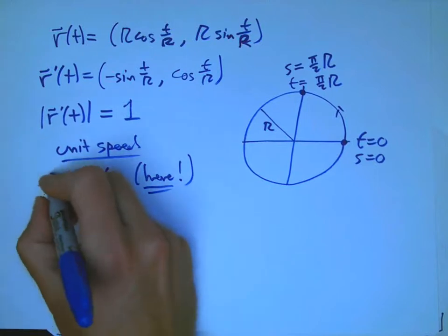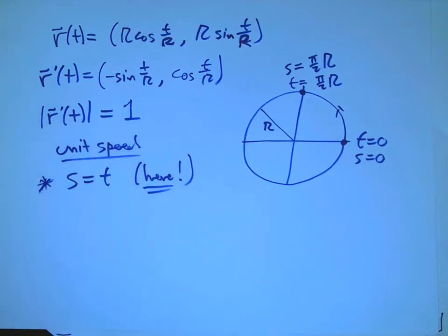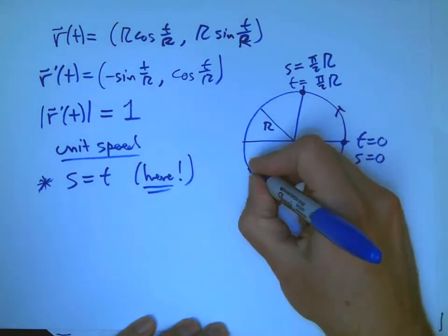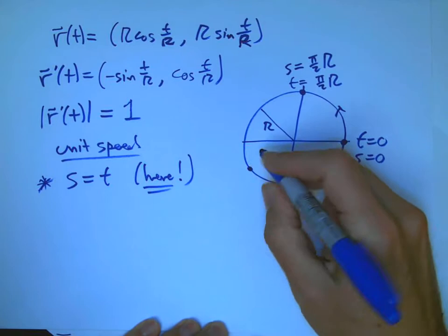So this is one of the nice, the two nice things that we're going to see at the start here. Now, let's look as we go around the circle. Here's what I want to do. I want to think about curvature.